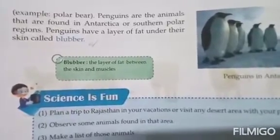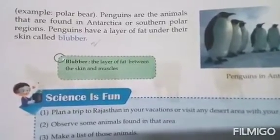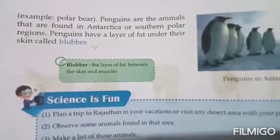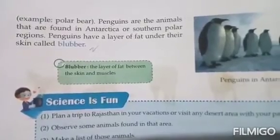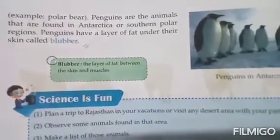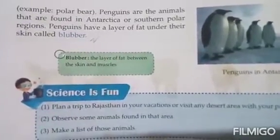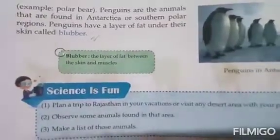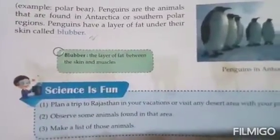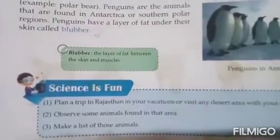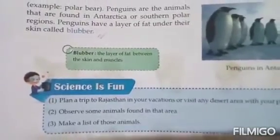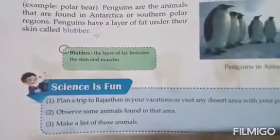These polar animals have a layer of fat under their skin called blubber. This layer of fat under the skin helps to protect and insulate them from the cold.